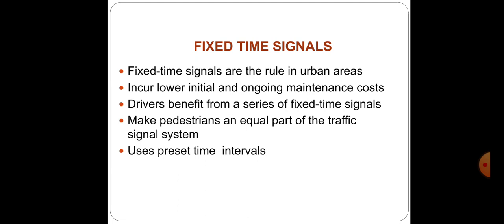Fixed time signals function satisfactorily at locations where there is no significant variation in traffic flow. The timing of each signal phase is predetermined based on traffic studies. They are the simplest and cheapest type of automatic traffic signal, operated electrically. The main drawback is that when traffic on one road is almost nil and traffic on the crossroad is very heavy, the heavy stream still has to wait at the red phase since the timing is preset.